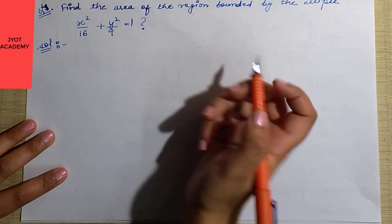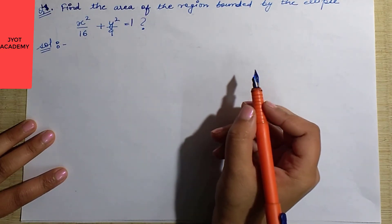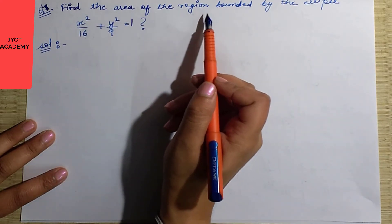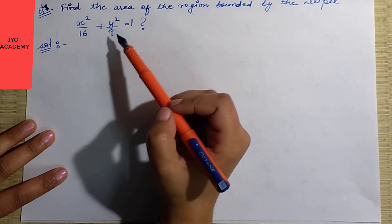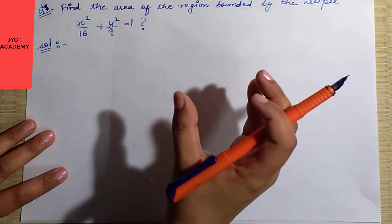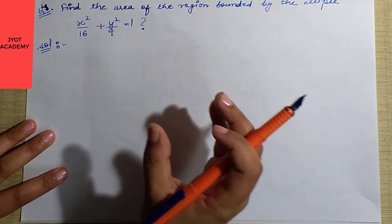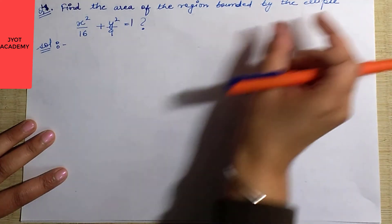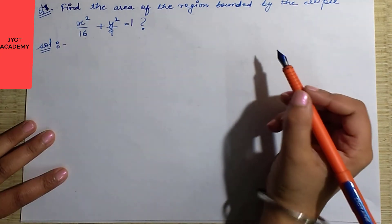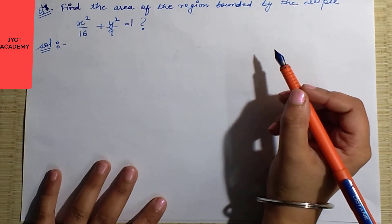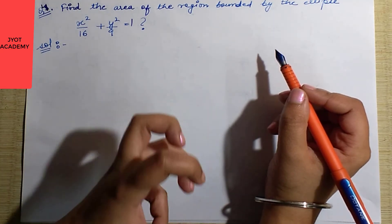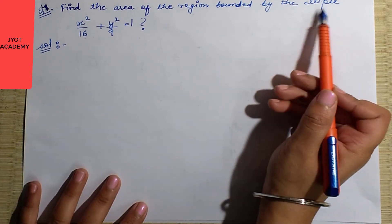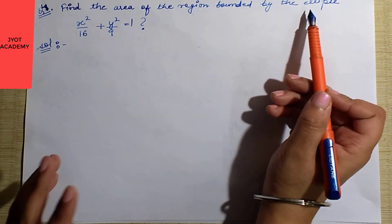Hello students, welcome back to my YouTube channel. This is Exercise 8.1 continued from question number 4: find the area of the region bounded by the ellipse. There is no specific mention to take only the first quadrant — the question asks for the complete region bounded by this ellipse.